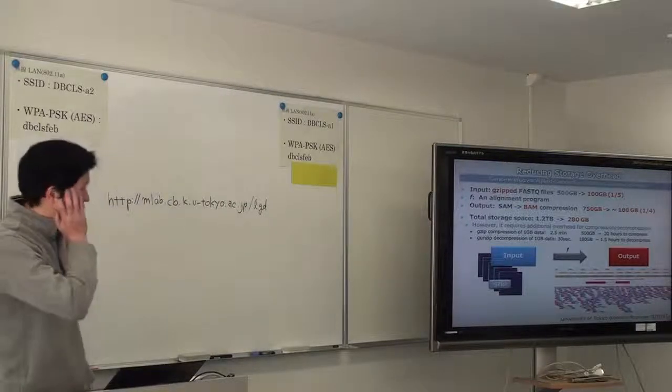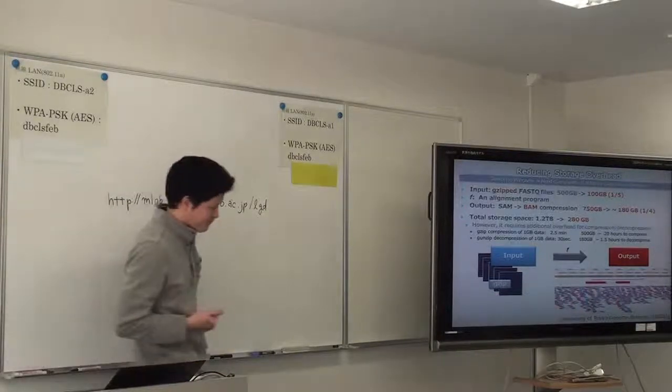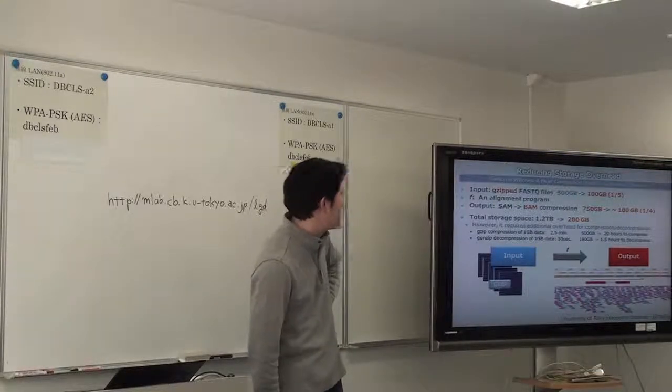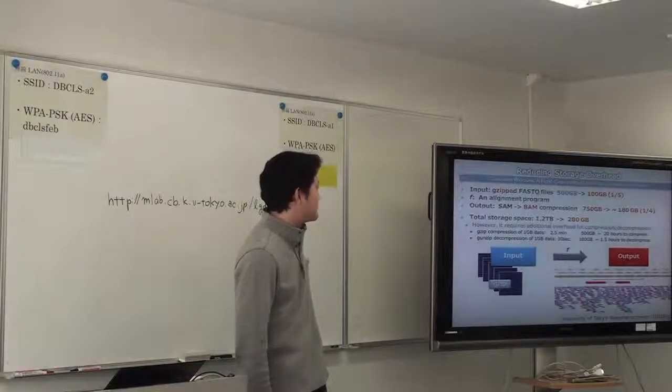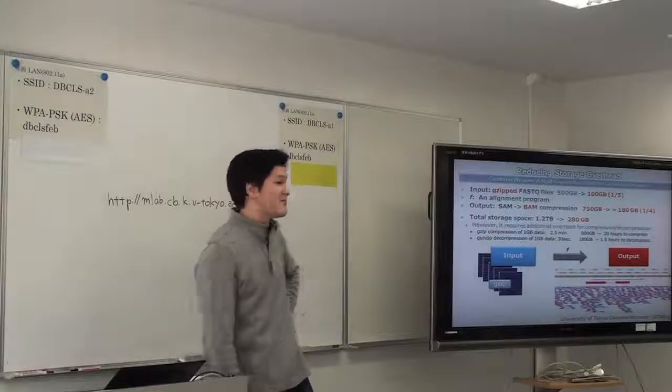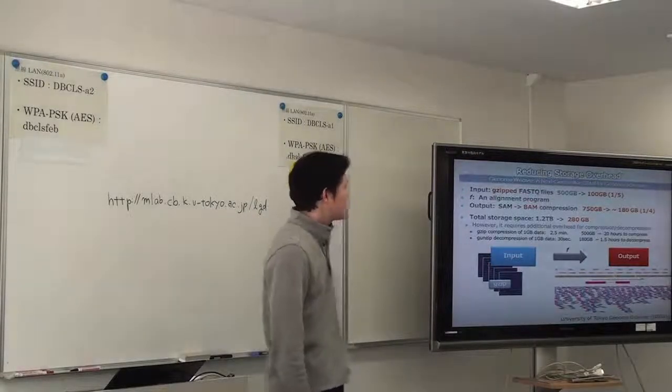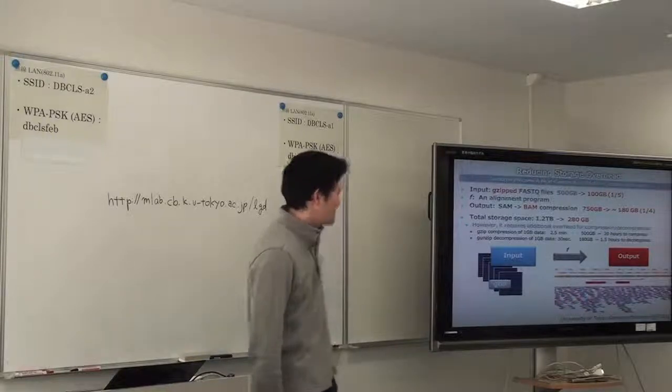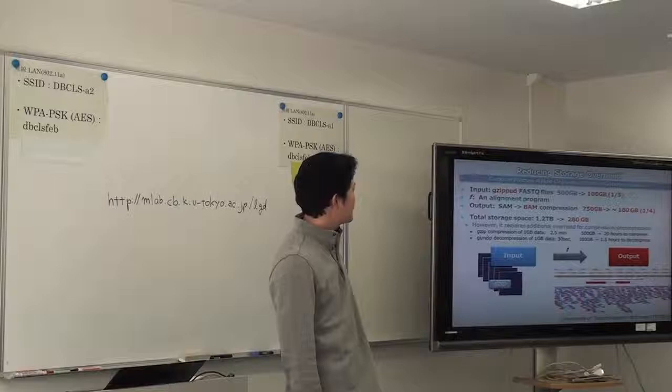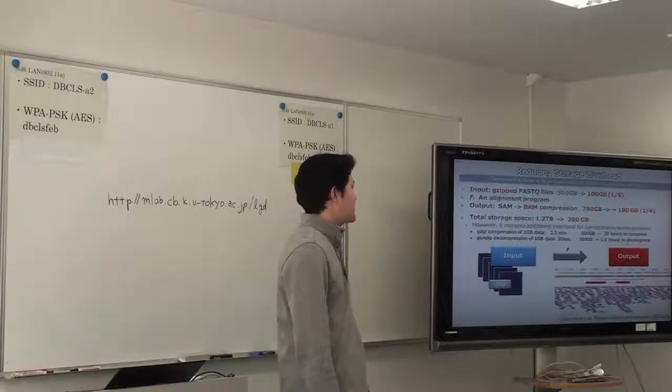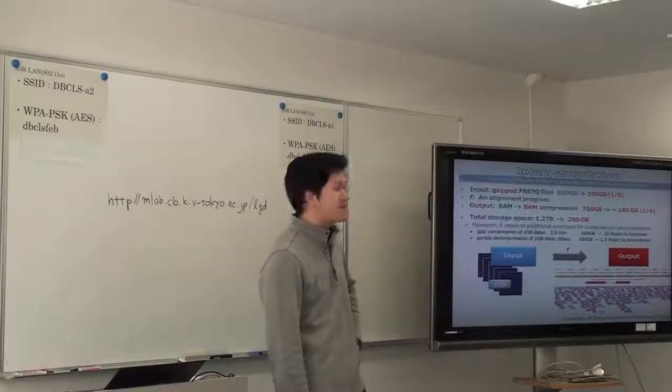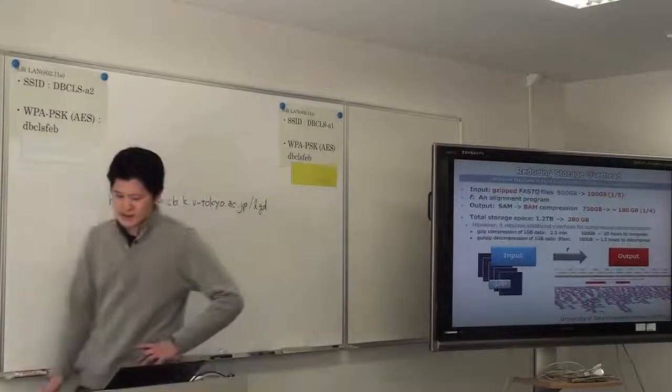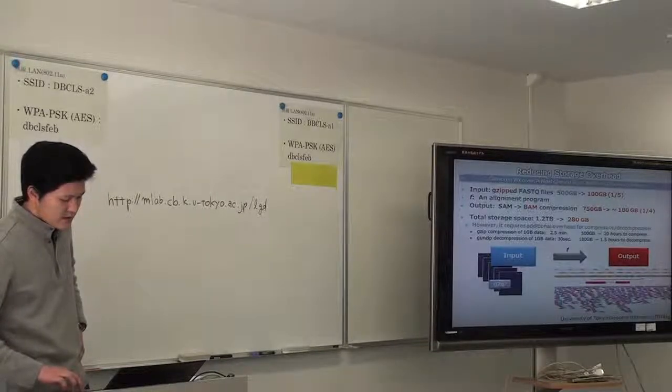However, this kind of compression requires additional overhead for compression and decompression. And here I show some benchmark results. So applying gzip compression and decompression. For compressing 1GB of data, 2.5 minutes are required. So for compressing 500GB of data, we need 20 hours. It's huge, it's a huge amount of time. And also, decompression of 1GB of data is 30 seconds. So compression and decompression takes much amount of time.